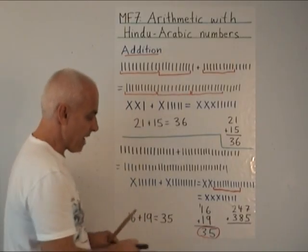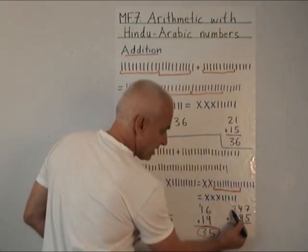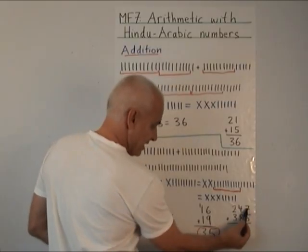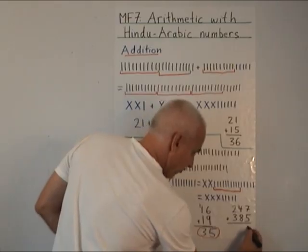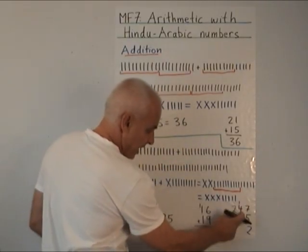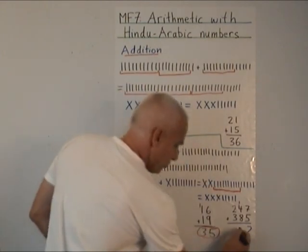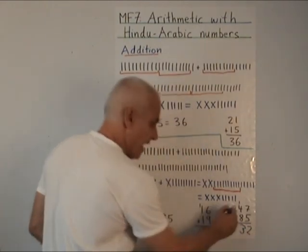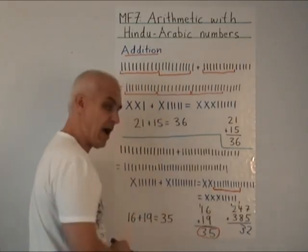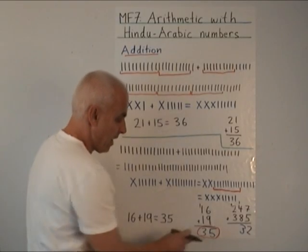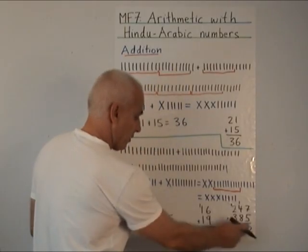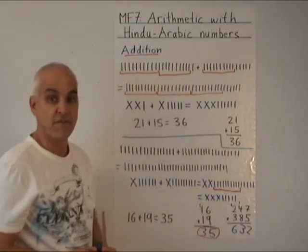Another example, same idea. Let's say we have 247 plus 385. We start with the 1s. 7 plus 5 is 12, which we write as 2 ones and 1 ten. Then all together the tens, we have 13 tens, which we write as 3 plus 10 tens. And the 10 tens is written as 100. Those are the hundreds column. And all together we have 600. And so we have 632 as the final answer.